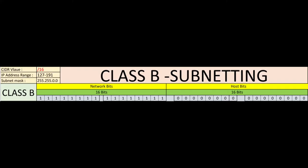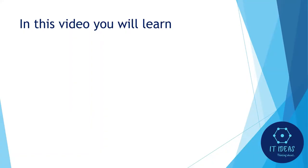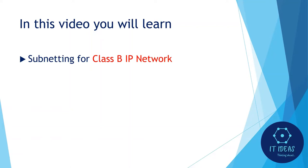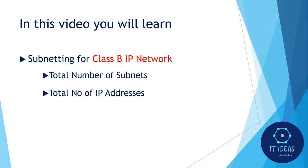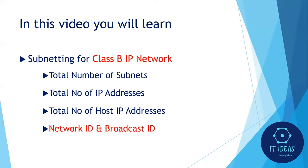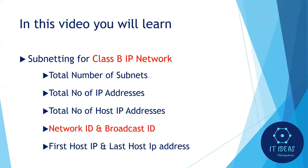Welcome back to my channel. In this video, we are going to see how to do subnetting for Class B IP network. This will cover the below list of items: how to find total number of subnets, how to find total number of IP addresses in every subnet, how to find total number of host IP addresses in every subnet, and how to find network ID and broadcast ID for every subnet, and how to find first host IP and last host IP address for every subnet.